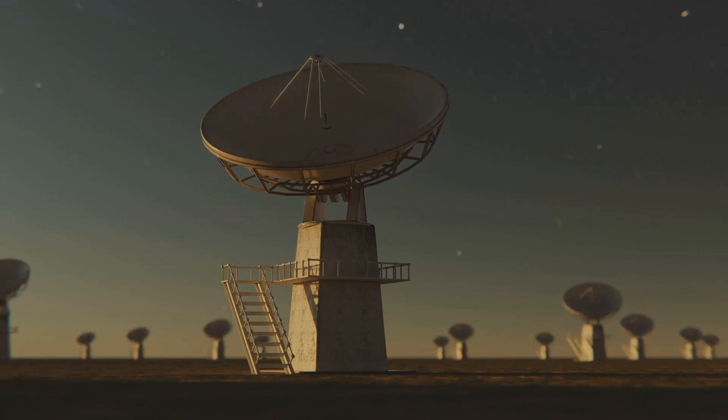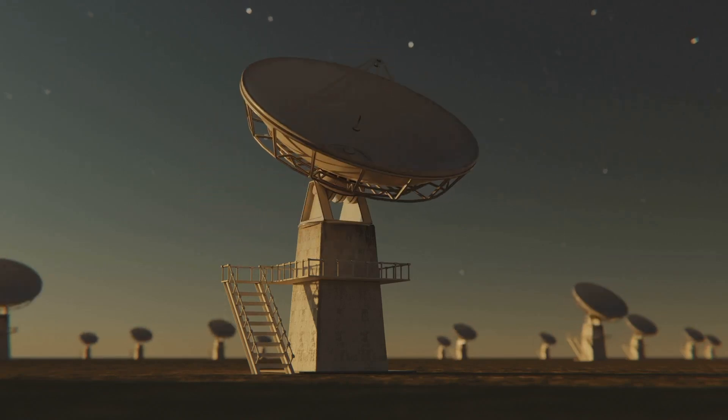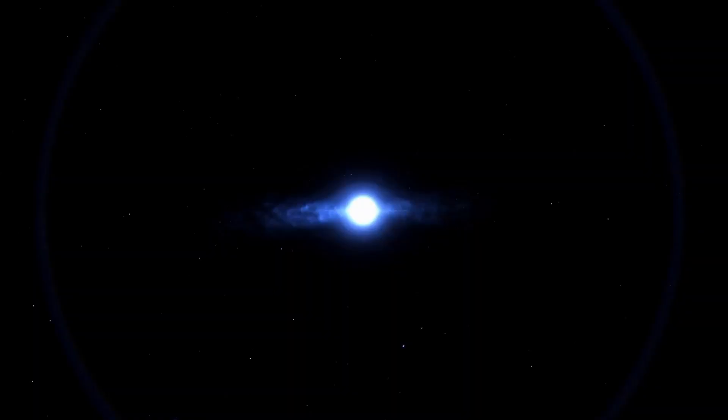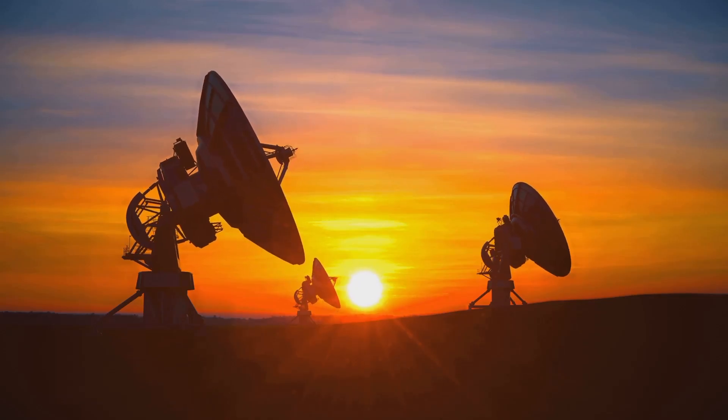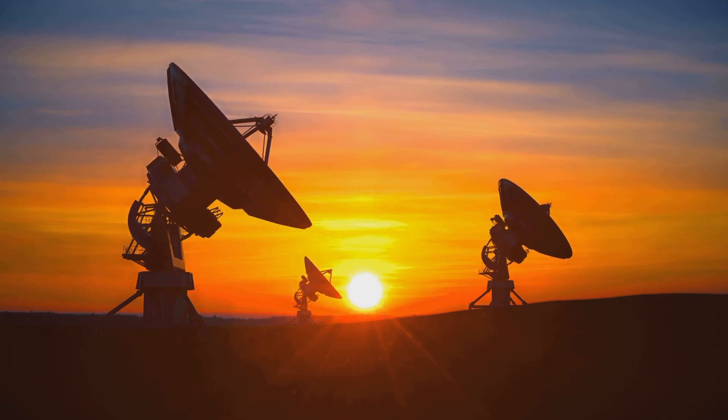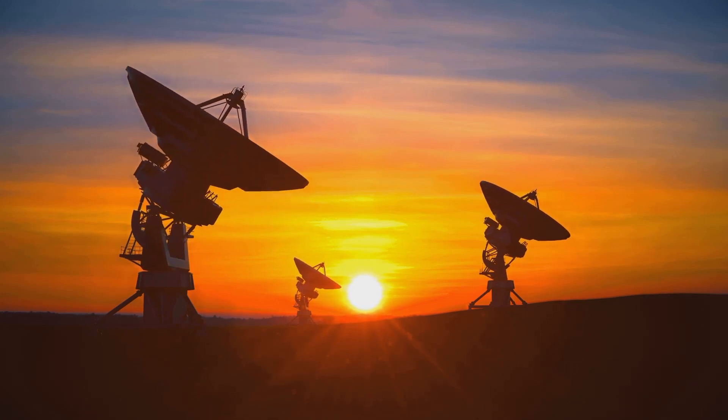But here's the problem. Our 22-minute signal doesn't fit this model at all. Pulsars lose energy over time, which causes them to slow down. Eventually, they cross into what scientists call Death Valley, a point where they no longer produce radio waves. Looking at a chart of neutron stars, our signal is well within the Death Valley, meaning it shouldn't be emitting any radio waves at all.